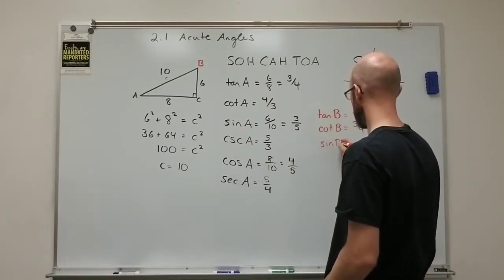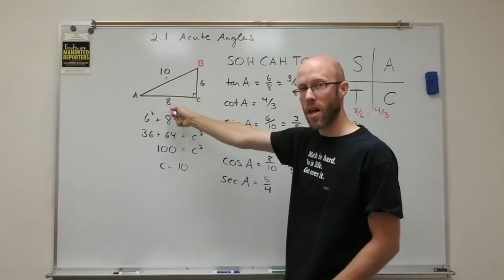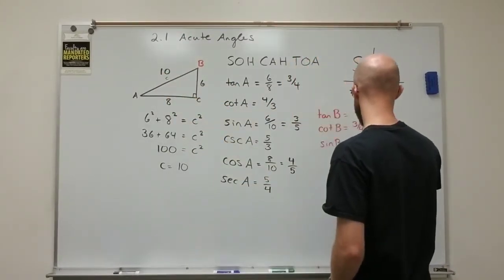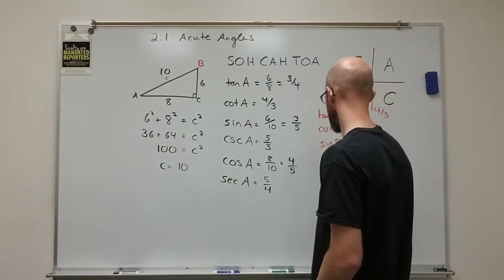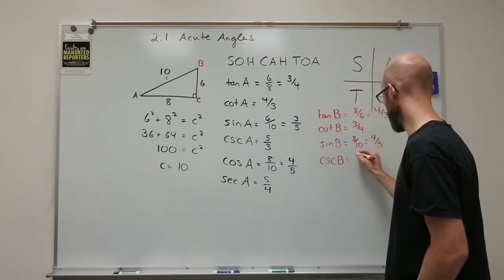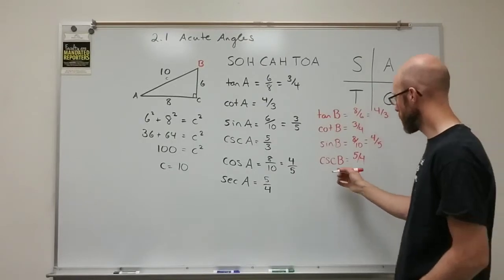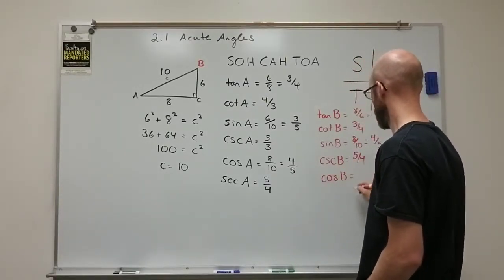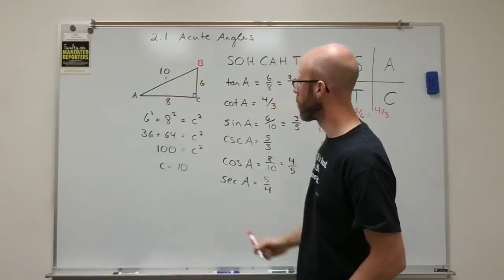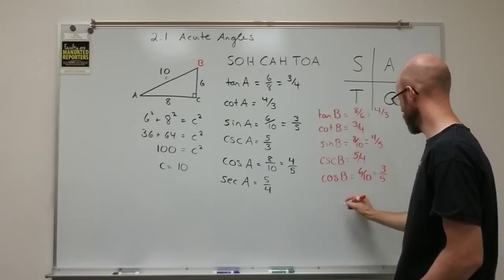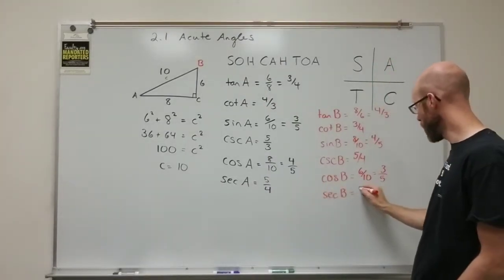The sine of B is opposite over hypotenuse — the opposite side from B is eight, the hypotenuse is ten — so eight-tenths reduces to four-fifths. The cosecant is the reciprocal, which is five-fourths. The cosine of B is adjacent over hypotenuse — adjacent is six, over ten — reducing to three-fifths. The secant, the reciprocal of the cosine, is five-thirds.